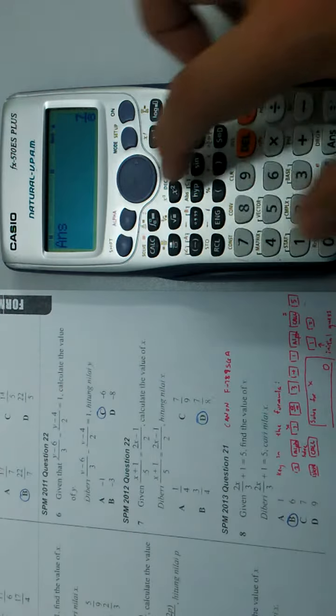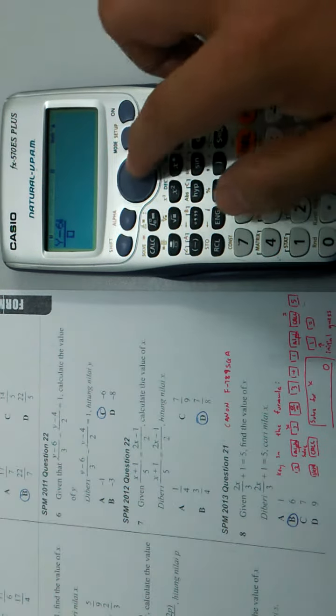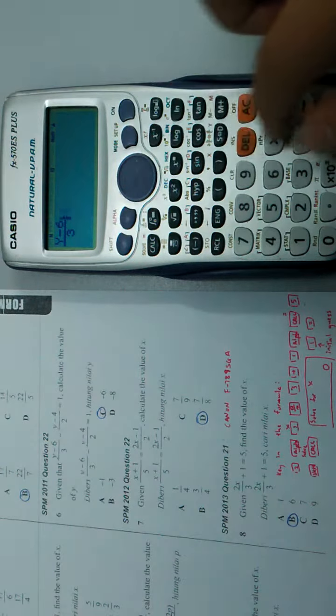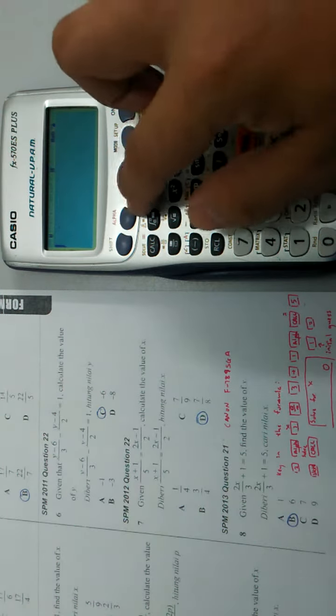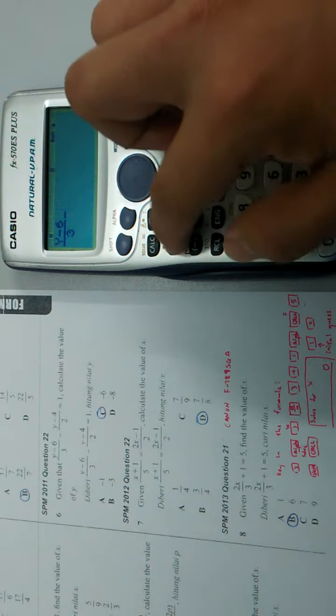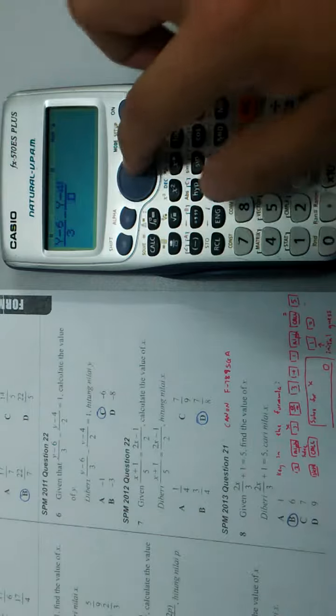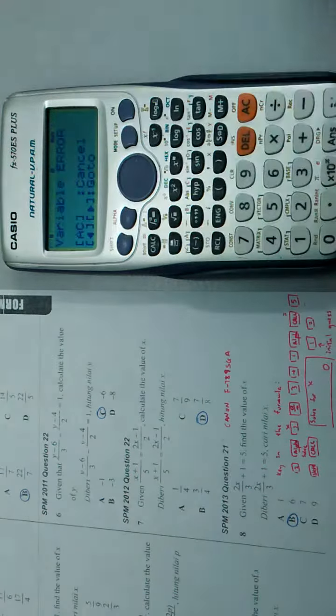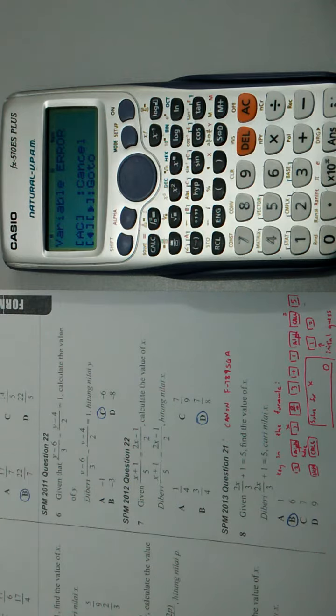And this one I have (y - 6)/3 = -y/4/2 = 1. I call for solve and it returns a variable error because the solve function only supports x.